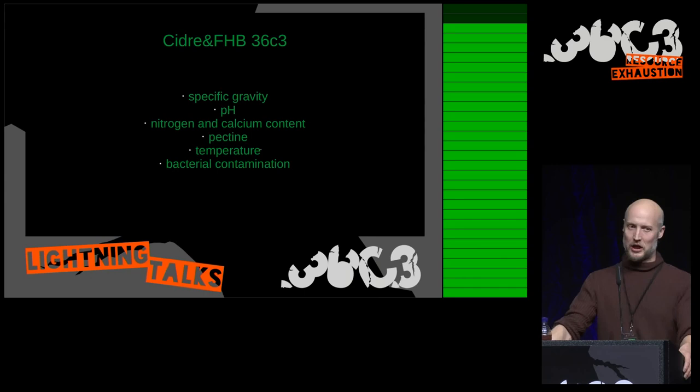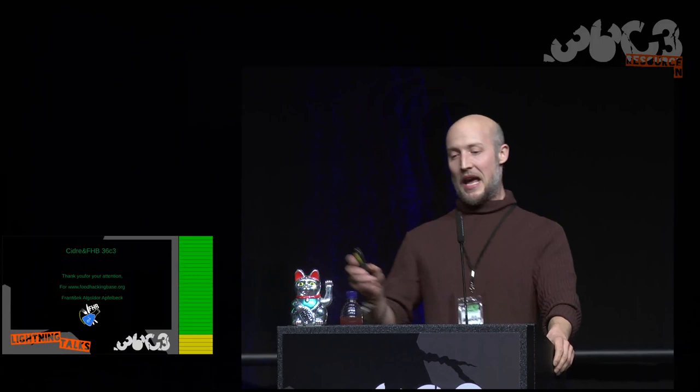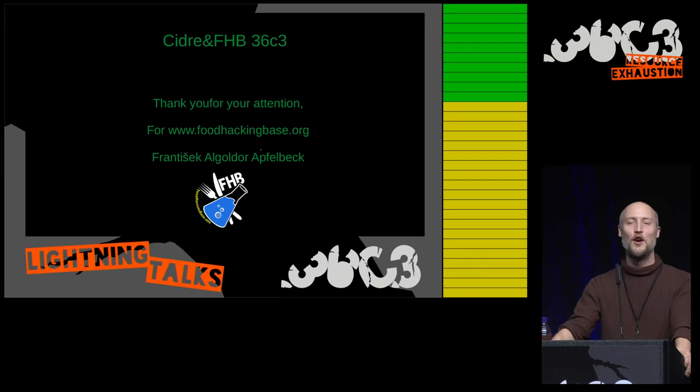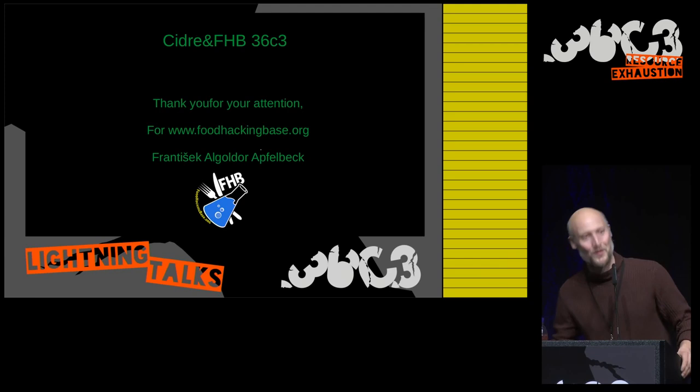When making cider, you want to check specific gravity when you press your juice — this tells you the sugar content and ultimately how much alcohol you'll get. Check pH, nitrogen, and calcium in the lab so your bottles don't explode and défécation happens properly. Try to ferment around 8°C if you can, and check for bacterial contamination because if you have too much, you're in trouble and may get explosions. This is a very simple overview of cider making. If you want to know more, visit Food Hacking Base in Hall 2 — we can talk, taste, and though the cider tasting is fully booked, we have some ciders to offer. Thank you.